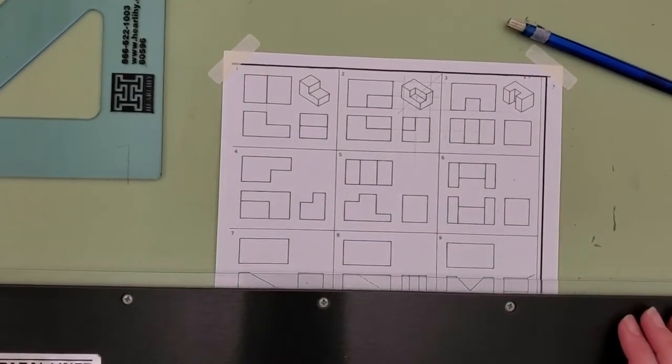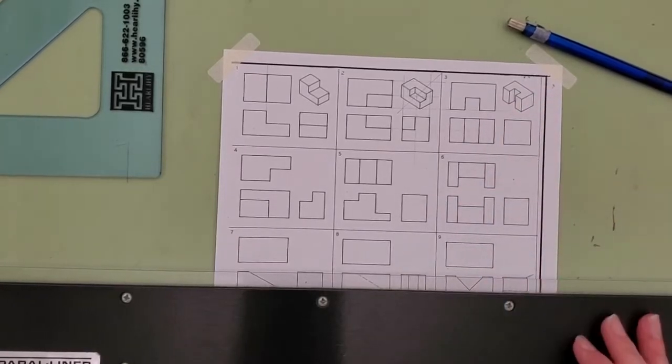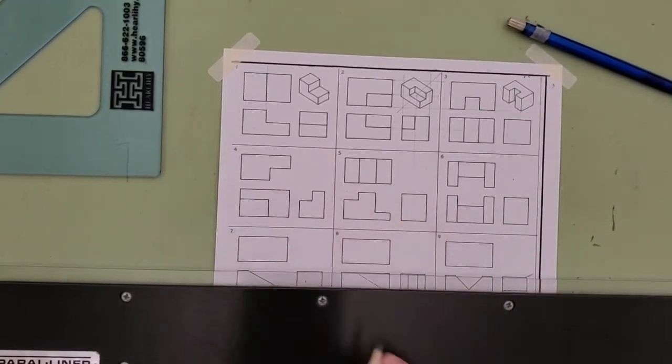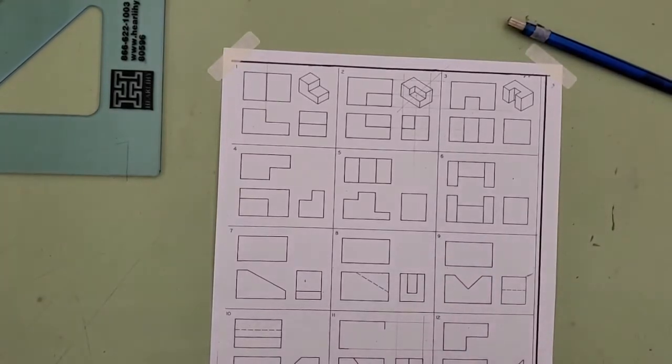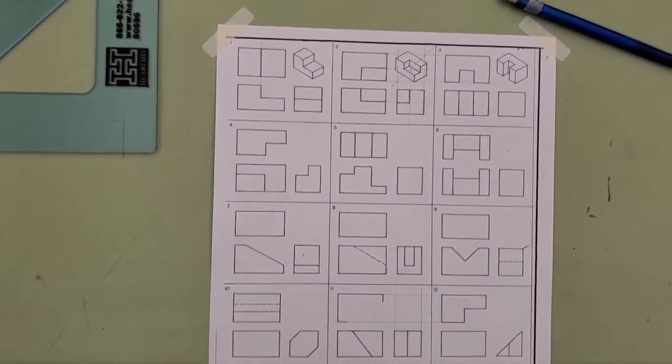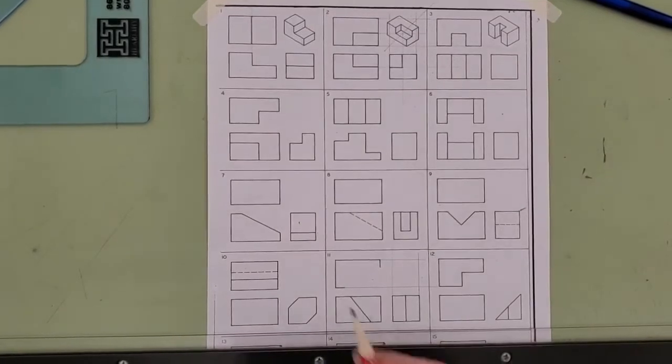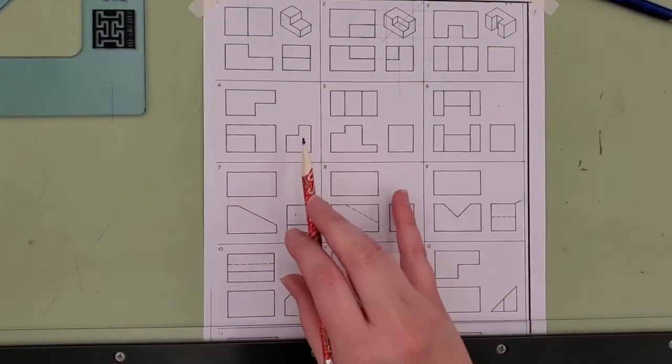So the last one that I want to do with you - I'll let you figure out number three - but I want to show you number four real quick because this one makes it a little bit more difficult. Looking at number four, I'm missing lines on the top and the side view.